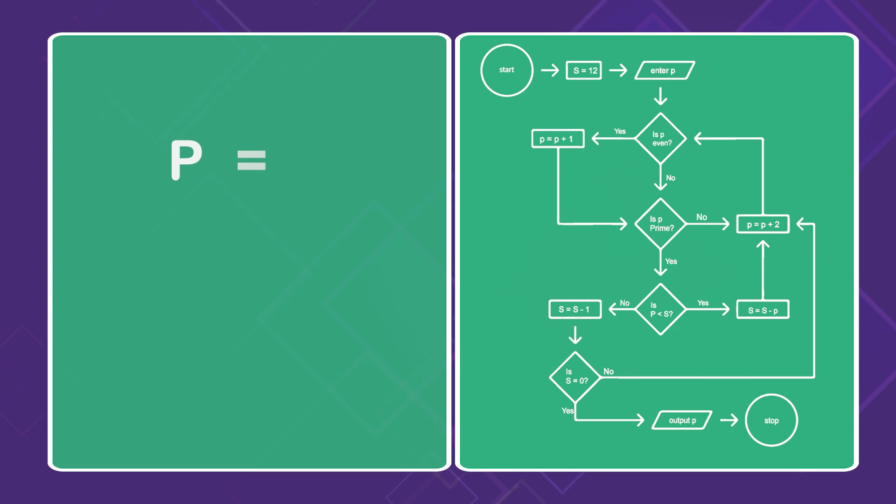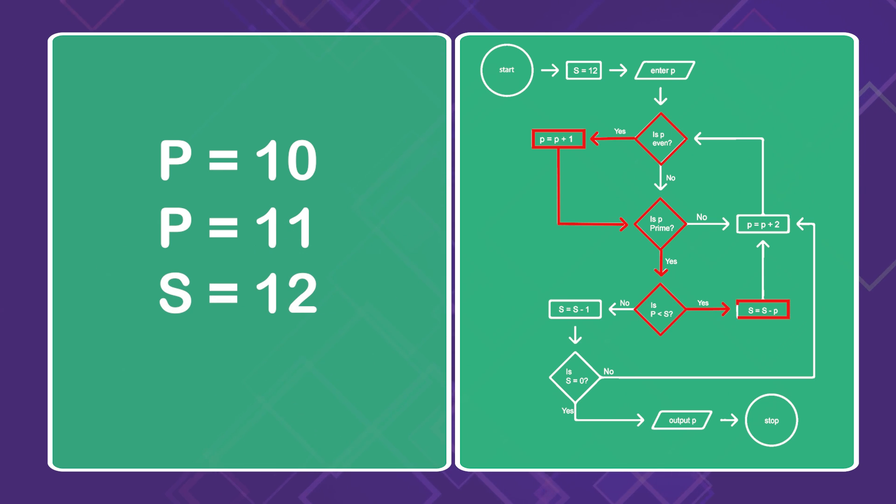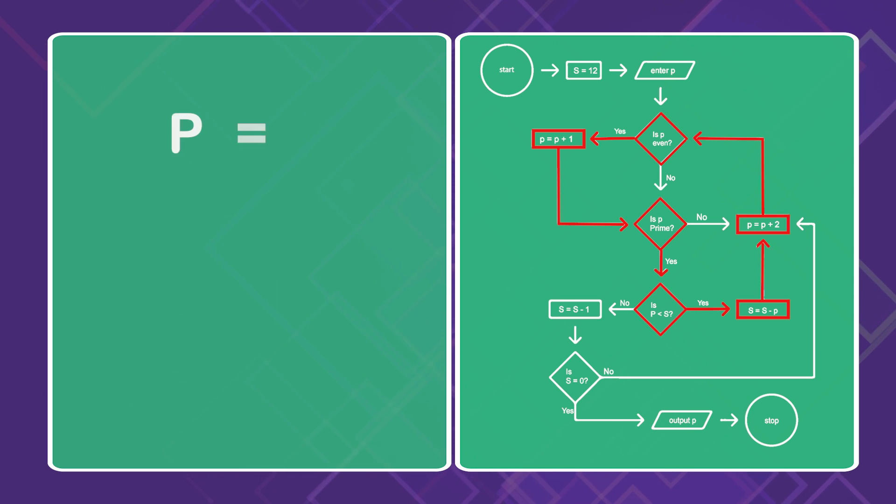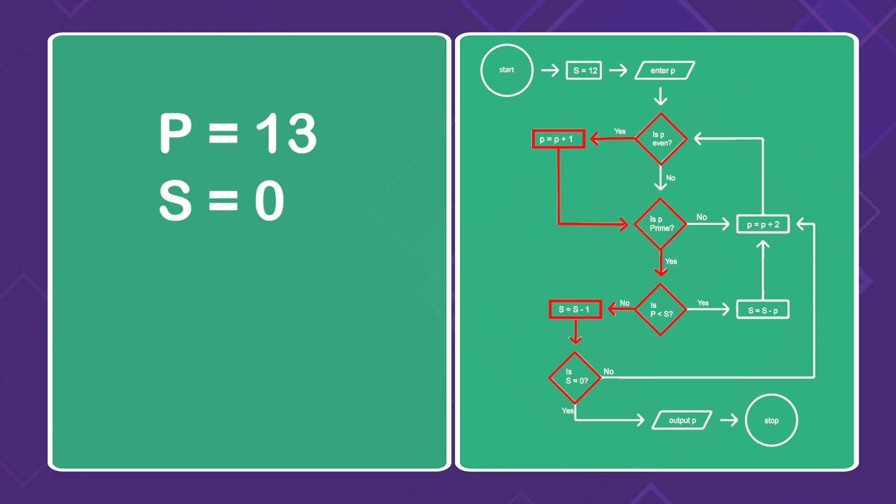Suppose we start with p equals 10. Also even, so immediately it nudges up to p equals 11, which is prime. That would go to the lower loop, and in one fell swoop, s would go down from s equals 12 to s equals 1. Great! That means there would be only one more trip around the upper loop. p goes up to p equals 13, which is also prime, and back to the lower half. s goes to zero, and the process outputs p equals 13 and is done. That's a lightning fast conclusion.